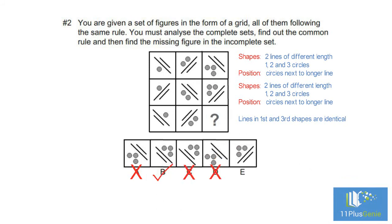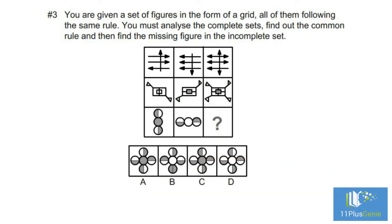Example number three: you are given a set of figures in the form of a grid, all of them following the same rule. You must analyze the complete sets, find out the common rule, and then find the missing figure in the incomplete set. This is an example of a combination of shapes in a row — the first two figures have been placed one on top of the other to form the third figure. We must work out if the first figure is placed on top of the second, or the second on top of the first.